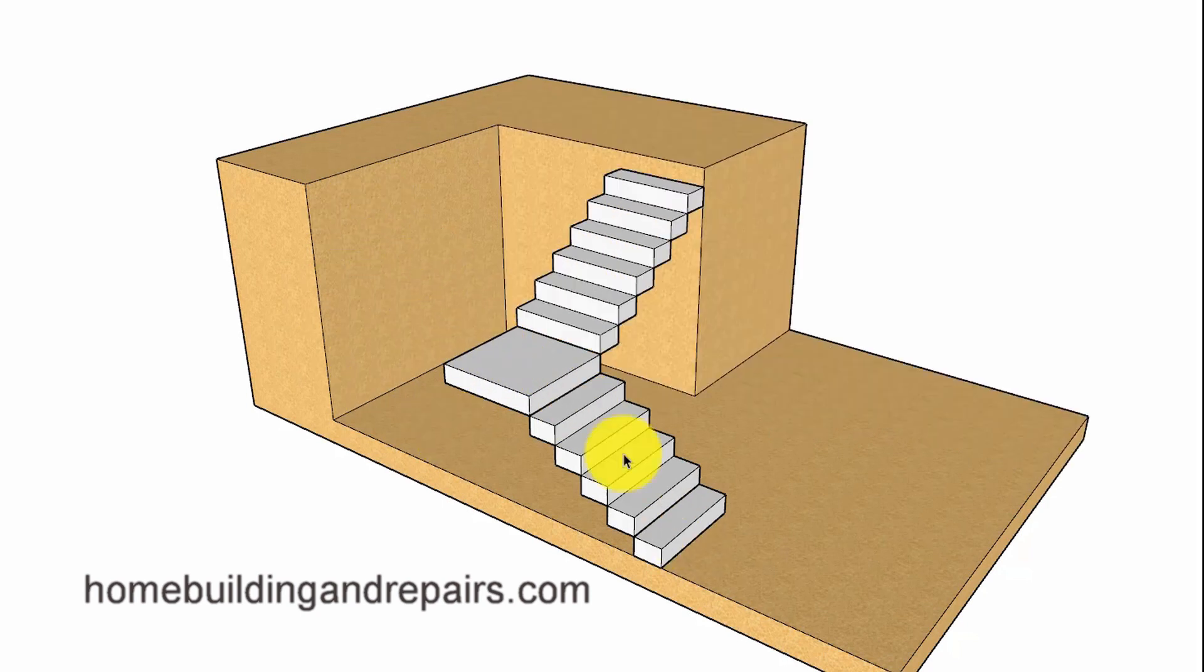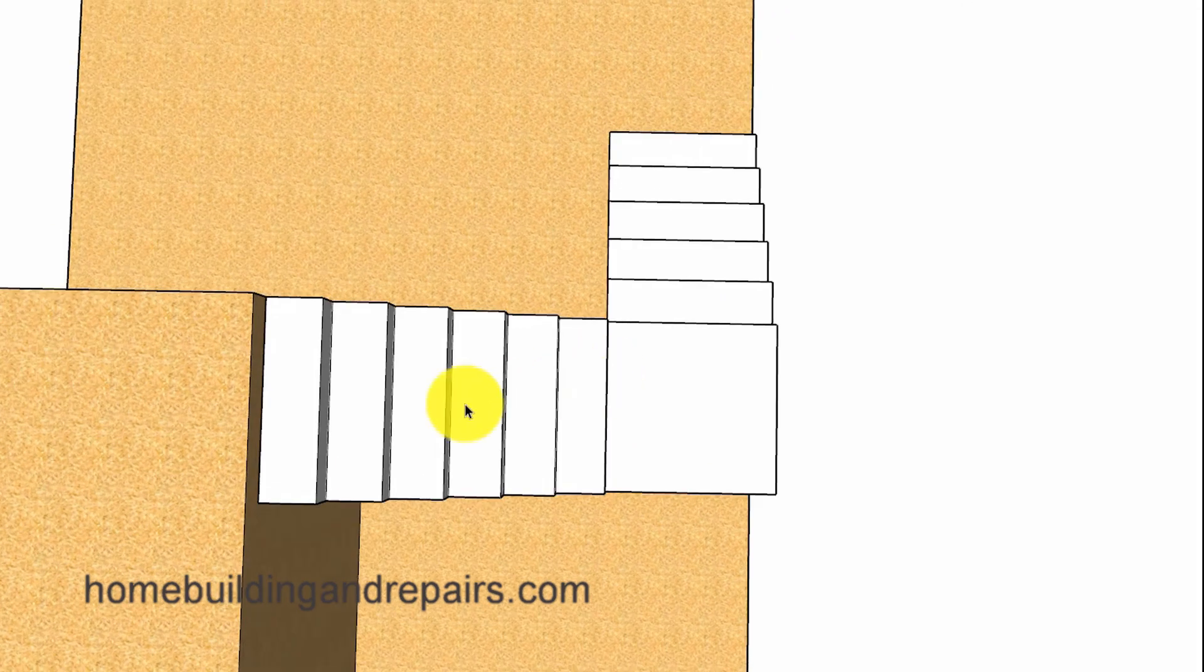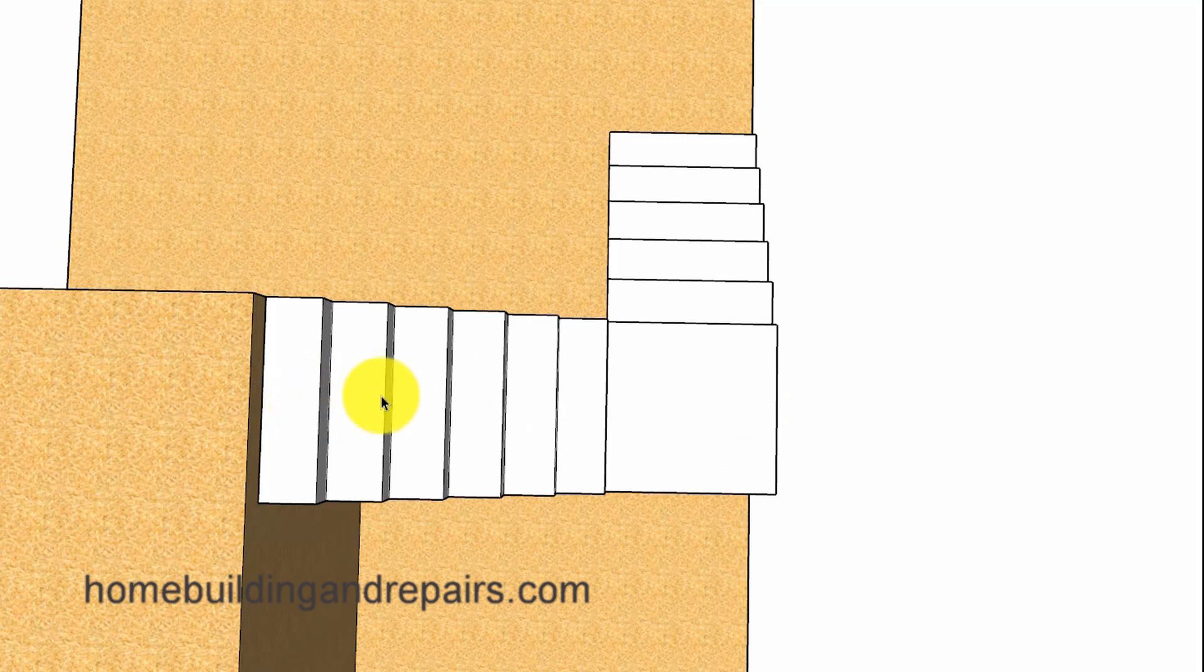Or instead of going straight up, I could have a stairway that goes off to the right or to the left. And this is a common stairway. This is often referred to as an L-shaped stairway with a landing.